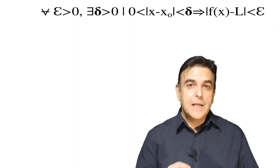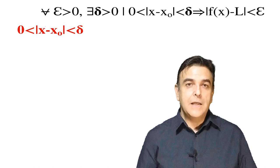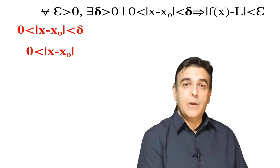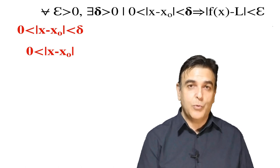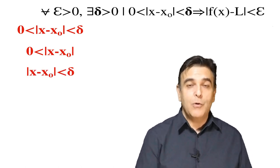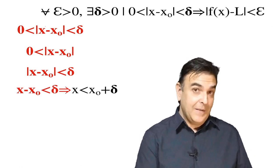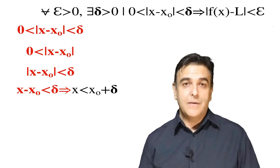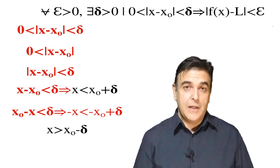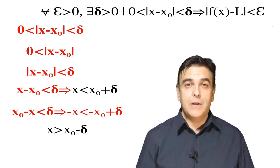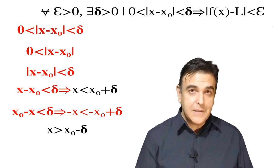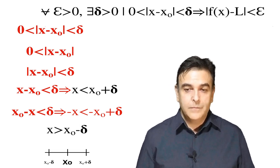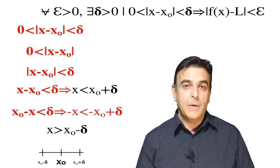El siguiente paso es 0 menor al valor absoluto de x menos x₀ menor que delta. Como valor absoluto, es mayor que 0 porque en la definición representan distancias, y las distancias siempre son positivas. En la parte positiva: x menos x₀ menor que delta, despejando x nos queda x menor que x₀ más delta. En la parte negativa, cambiando el signo, obtenemos x mayor que x₀ menos delta. Esto significa que hemos creado alrededor de x₀ un intervalo cuyo radio es delta.